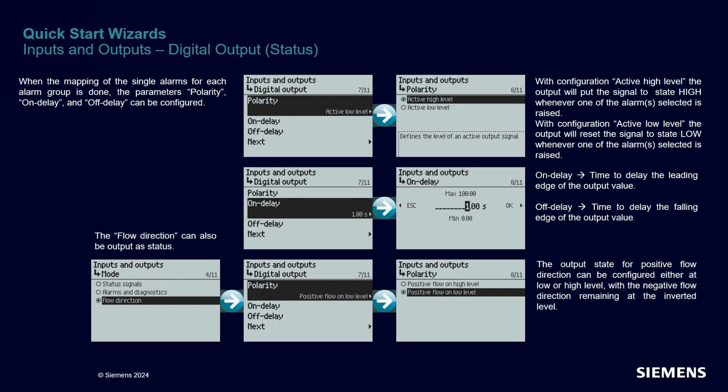The last configuration step when using the status mode of the digital output is to define the polarity of the output and its duration in case of trigger. This covers the inputs and outputs portion of the wizards.